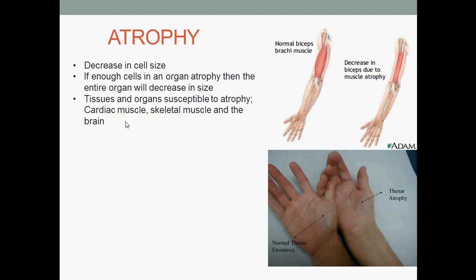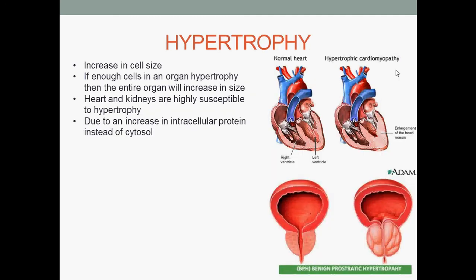First, atrophy. Atrophy is the decrease in cell size, and if enough cells in an organ undergo atrophy, then the entire organ will decrease in size, as seen here occurring in the biceps. Tissues and organs that are susceptible to atrophy include the cardiac muscle, skeletal muscle, and the brain.